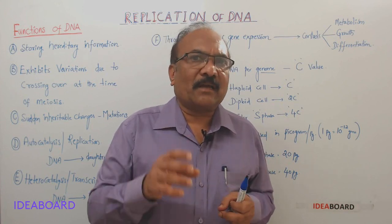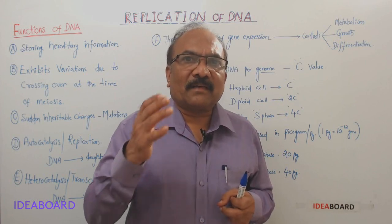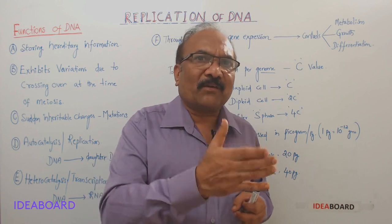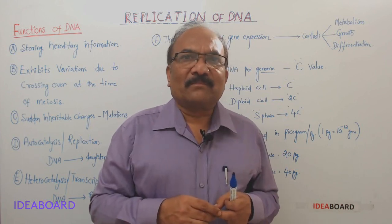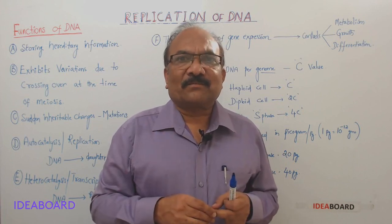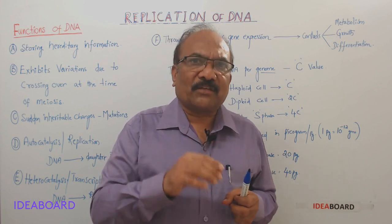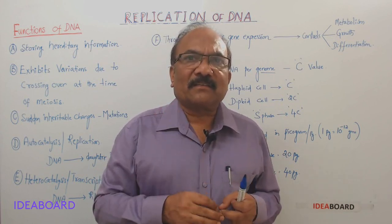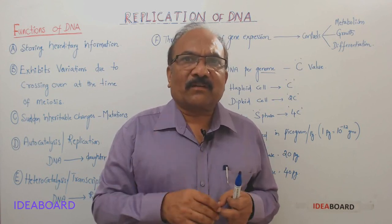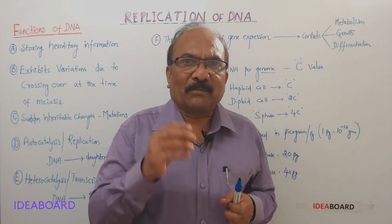Gametes are haploid. These haploid gametes are produced by a diploid organism by the most important cell division called meiosis. During meiosis, not only the ploidy will change, but variations also occur during prophase 1. During prophase 1, there are 5 sub-phases.